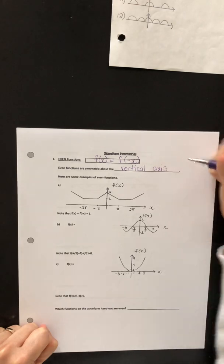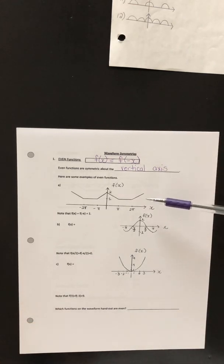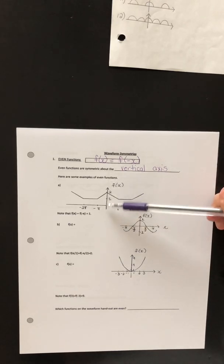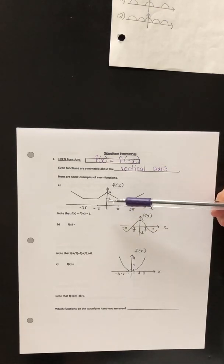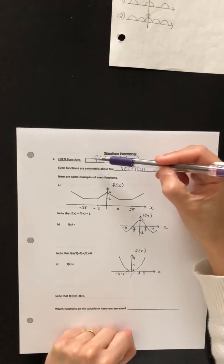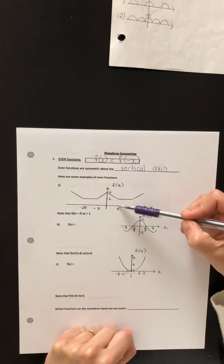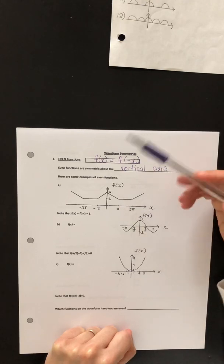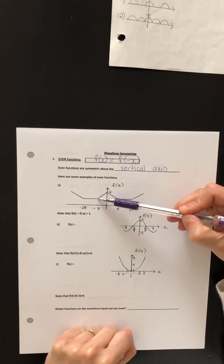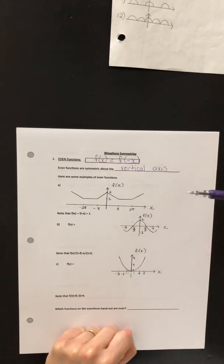Even functions are said to be symmetric about the vertical axis, and this page has three examples of even functions. Here's an even function — you can see that it is symmetric about the vertical axis. That axis serves as a mirror, so we have the mirror image of the right side on the left side. For example, if we look at the value of f at pi, it would be 1, and f at negative pi is also 1. This is true for all values of x.